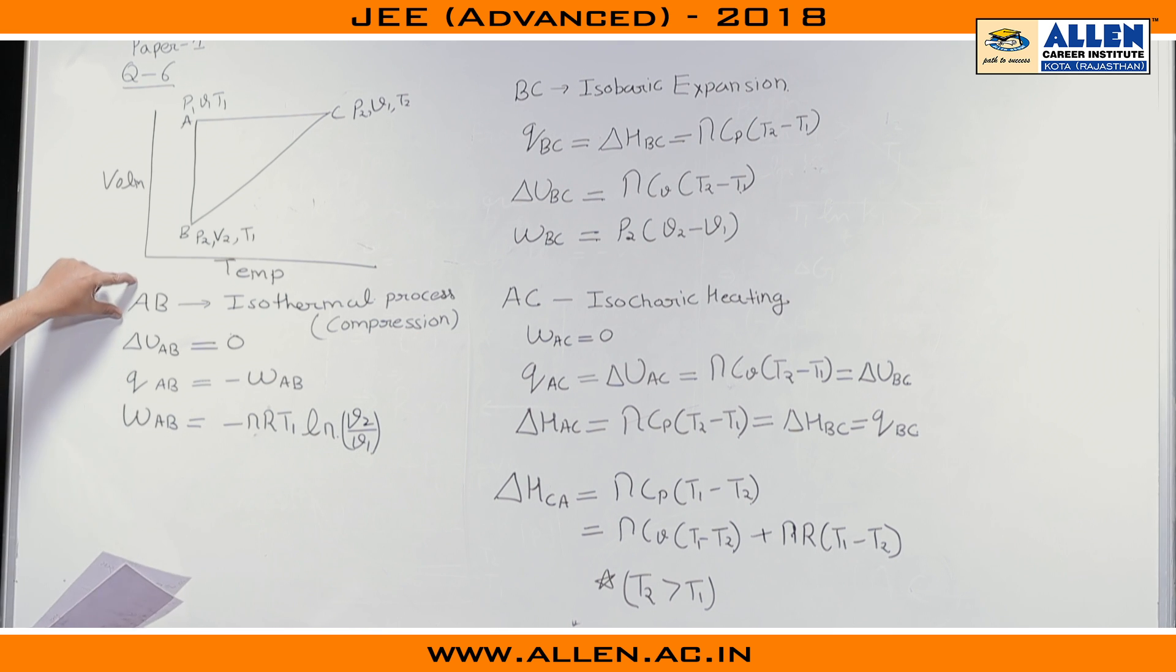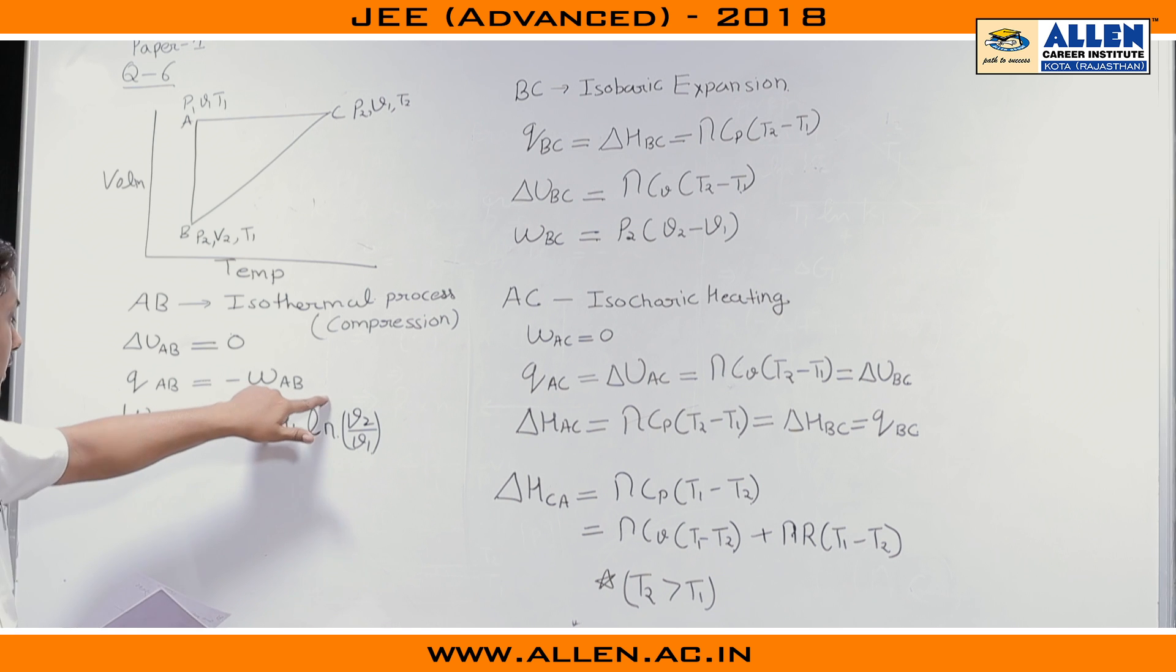Now for isothermal process delta U will be 0 and Q_A,B will be equal to minus of work done, that is minus W_A,B. W_A,B can be written as minus nRT₁ ln V₂ by V₁.